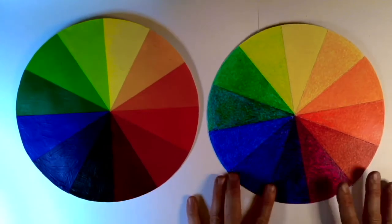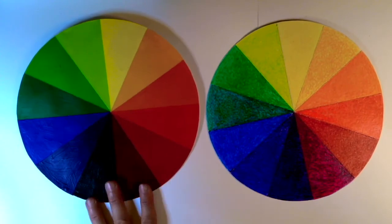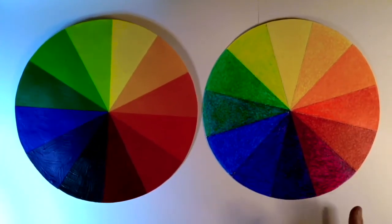You can see that the crayon does quite nicely in representing the hues, and so for our project I want us to use crayon to render our color relationships.